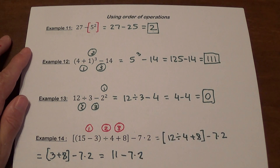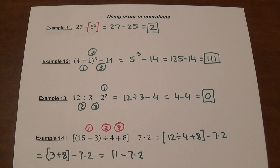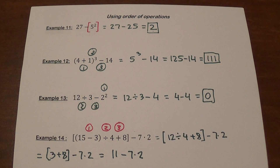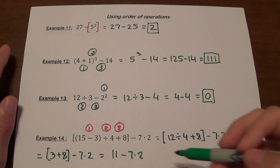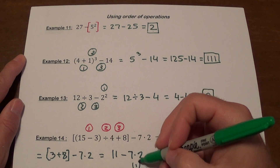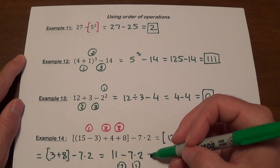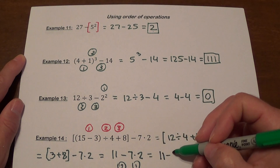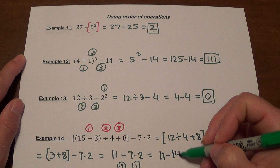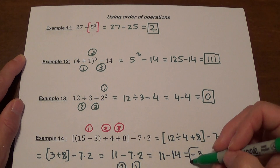Now that everything inside the brackets is complete, we look at what's outside. We have a similar expression — multiplication must be done before subtraction. So it's 11 minus 14, which gives us negative 3.